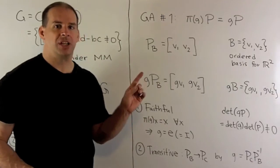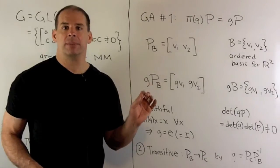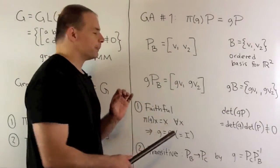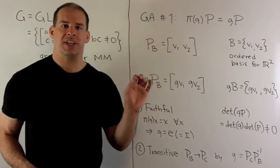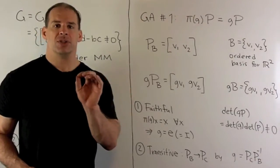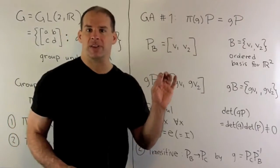Now, for this action, we're going to have two properties. The action's going to be faithful, and it's going to be transitive. Faithful just means if we have an element G that sends each element X to itself, then G has to be the identity. So, this is going to mean each element of G goes to a unique symmetry of the space X.